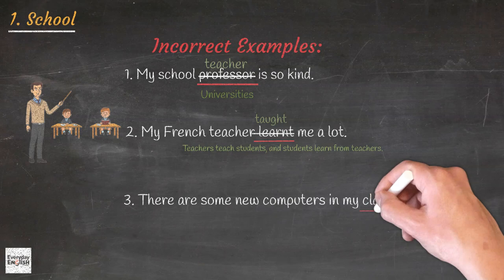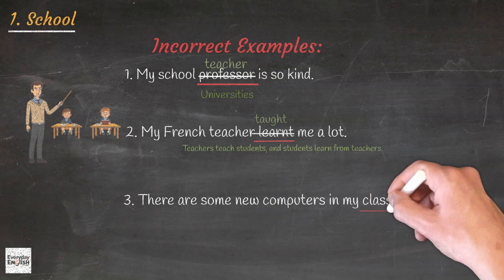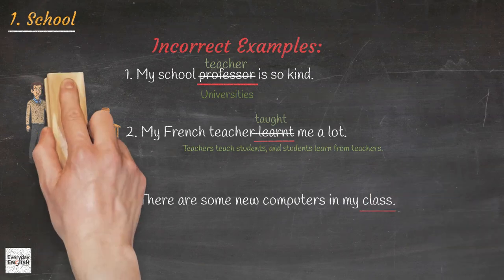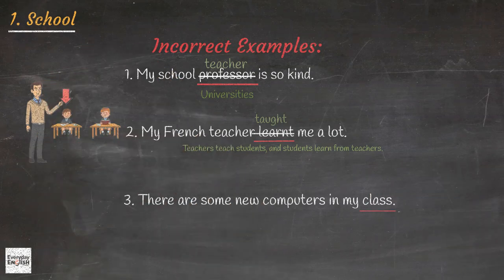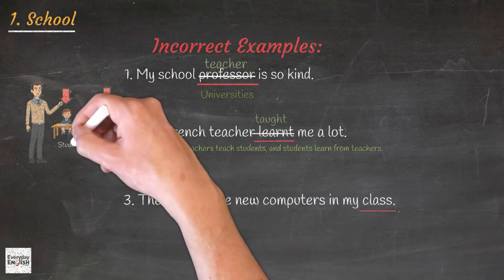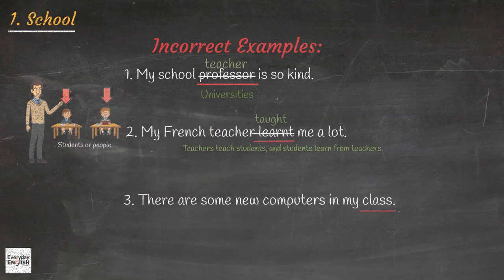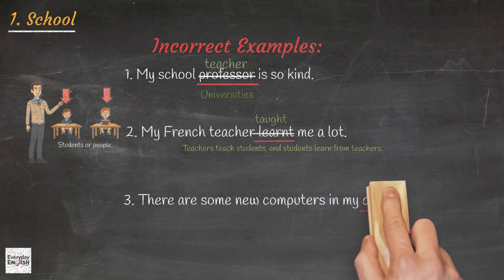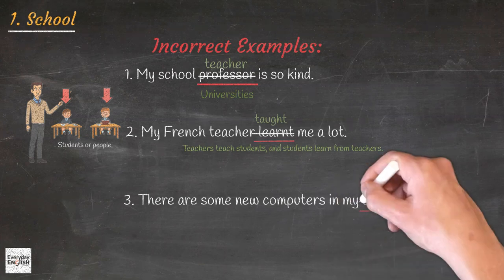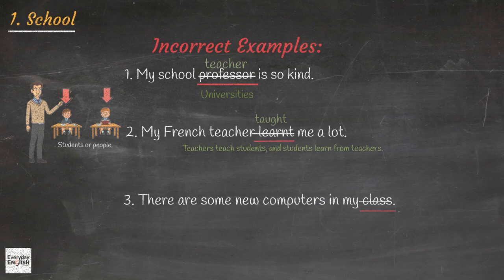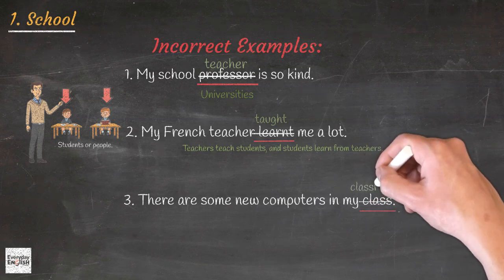The word 'class' refers to a collection of students or individuals learning. The classroom is the location where learning takes place. Hence, the appropriate term would be 'classroom.' For example: There are some new computers in my classroom.